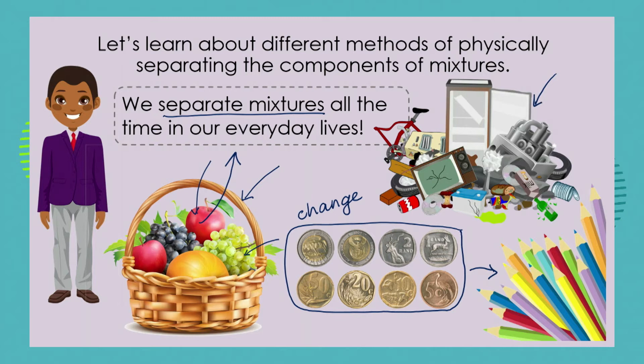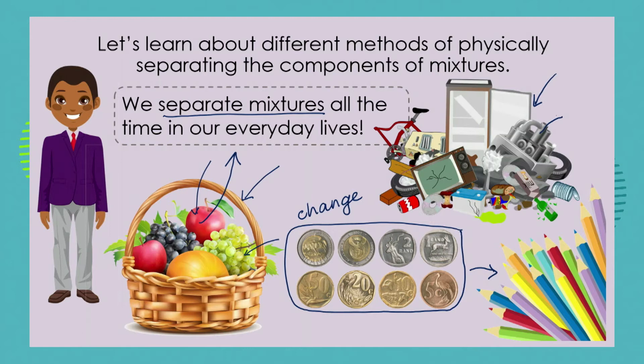This kind of sorting happens on a much larger level as well, where we have dump sites and landfills where things have been discarded. We often see people who separate metal goods from plastic goods in order to recycle them. They'll separate or sort out the glass from the mixture, and they'll even separate different kinds of metals from each other to recycle those materials. So sorting and separating mixtures is also something that's very important for the environment.